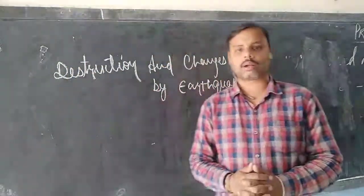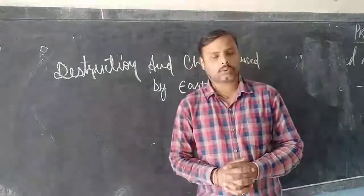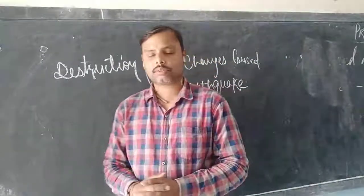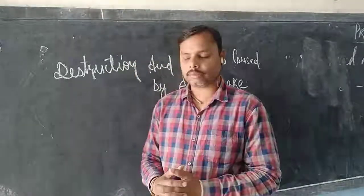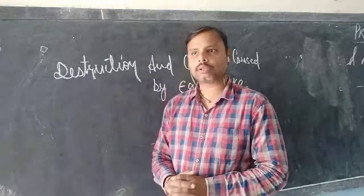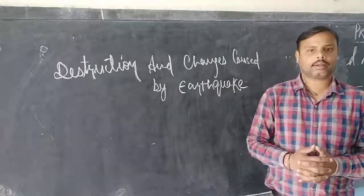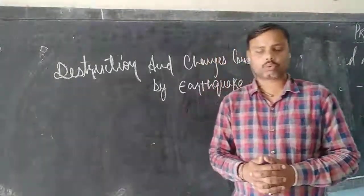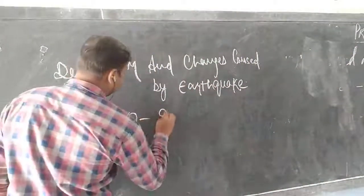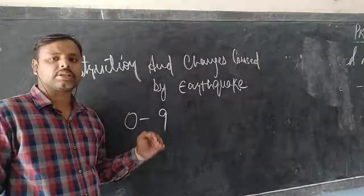We talked about the meaning of earthquake, what earthquake means, and what is the instrument used to measure the magnitude of the earthquake. The Richter scale is an instrument through which the vibration or magnitude of earthquakes is measured. Some places recorded Richter scale readings of more than 8. The Richter scale is bounded from 0 to 9, and after every level there is a 10-fold increase.